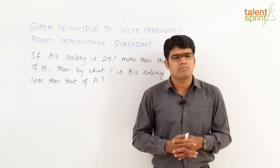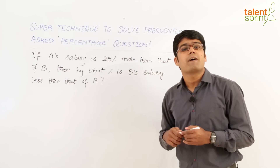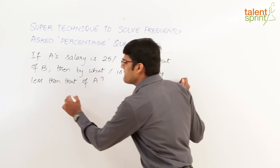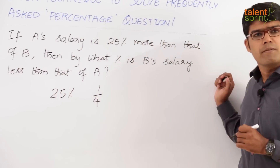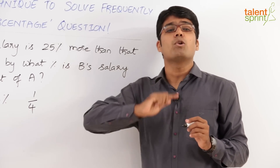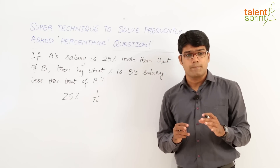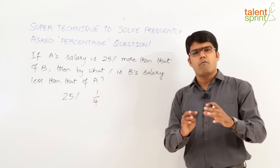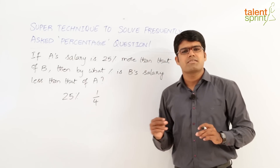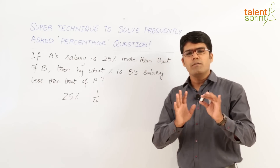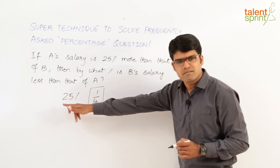So how do we solve this question? A's salary is 25 percent more than that of B. Now, 25 percent is 1 by 4. So we can say A's salary is one-fourth more than that of B, and we need to find by what percent B's salary is less than that of A. I am going to explain a very simple and smart technique that can help you get the answer in just 2 to 3 seconds. All we need to do is focus on this fraction — 25 percent is 1 by 4.